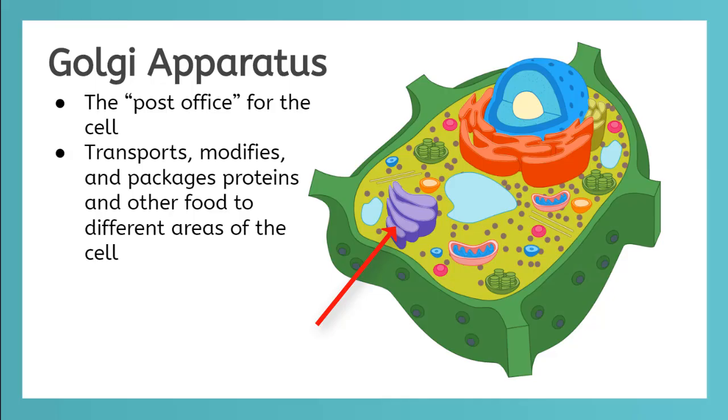The purple blob is the Golgi apparatus. It is called the post office for the cell. It modifies, sorts, and packages different materials to leave the cell or to be used in different places in the cell.